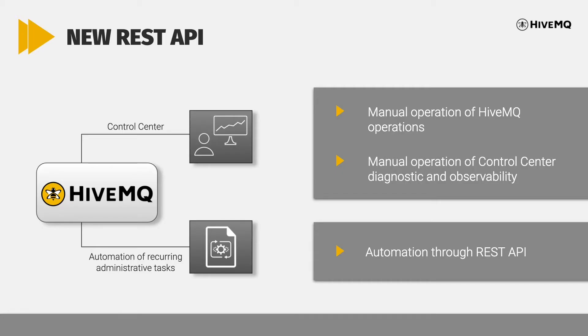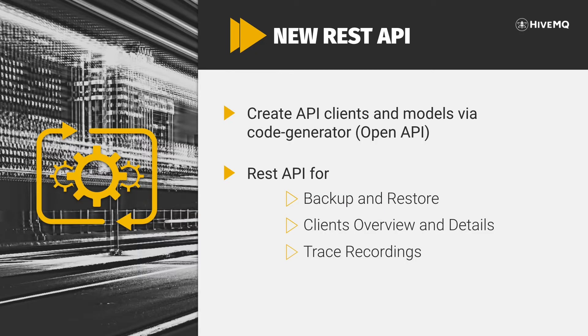With HiveMQ 4.4 we proudly introduce our new REST API, which allows HiveMQ operators to automate actions they would normally perform manually. For example, the REST API can be used to interact with HiveMQ programmatically, to start a trace recording or to initiate a backup process. Included in this release is the REST API for backup and restore functionality, the client's overview and details, and the trace recordings. For your convenience, we offer a code generator for easily creating API clients and models.